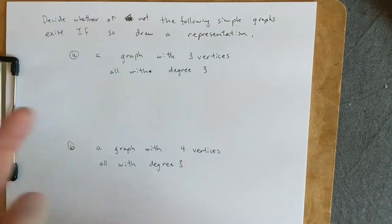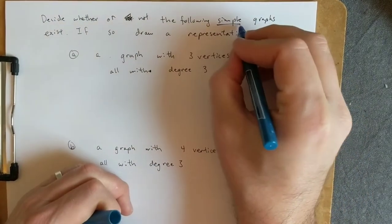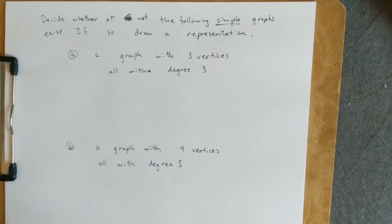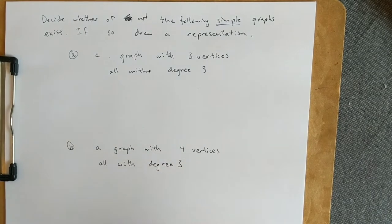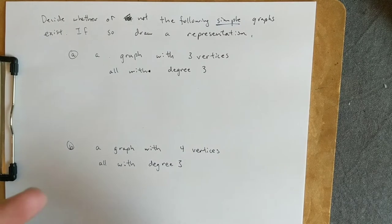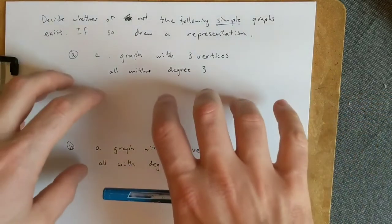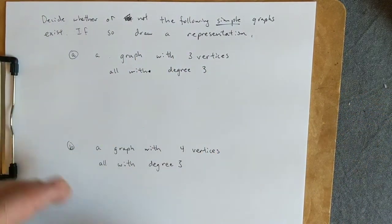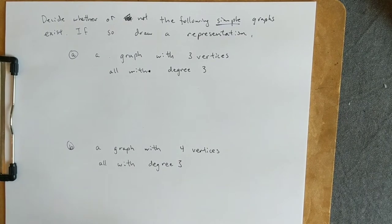What does simple mean? That's the first thing we should talk about. All of our graphs are going to be connected and simple. Simple just means we can't have more than one edge between the same two vertices. And connected means it's all going to be one cohesive graph. We're not going to have vertices that aren't connected at all, like there's no path between them. Let's solve this problem.